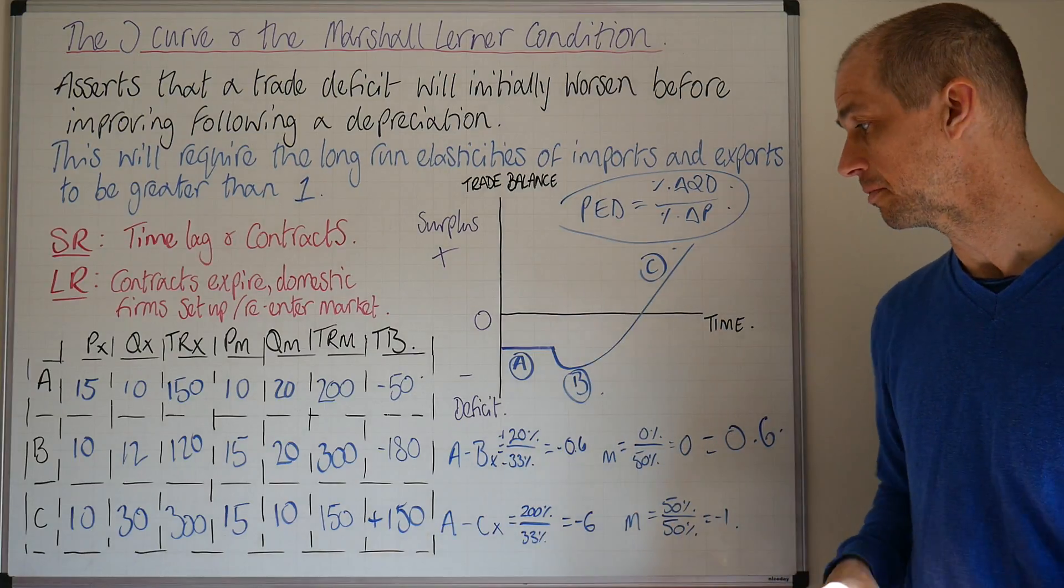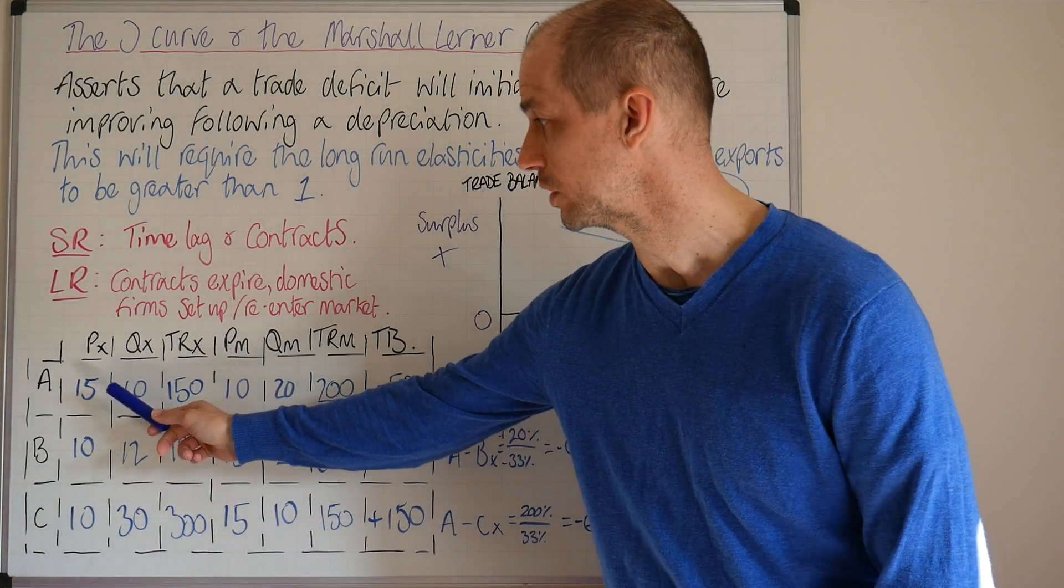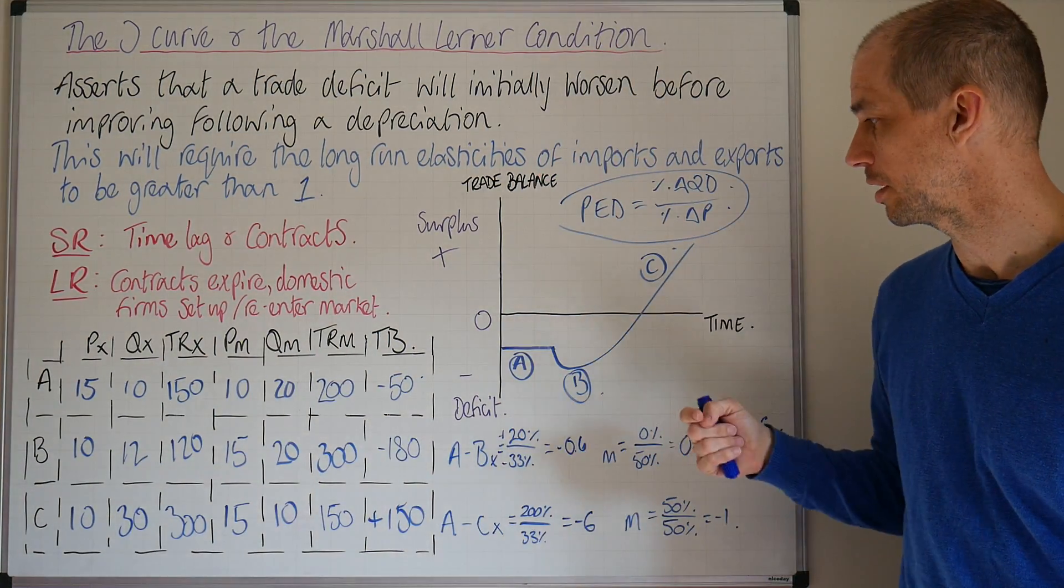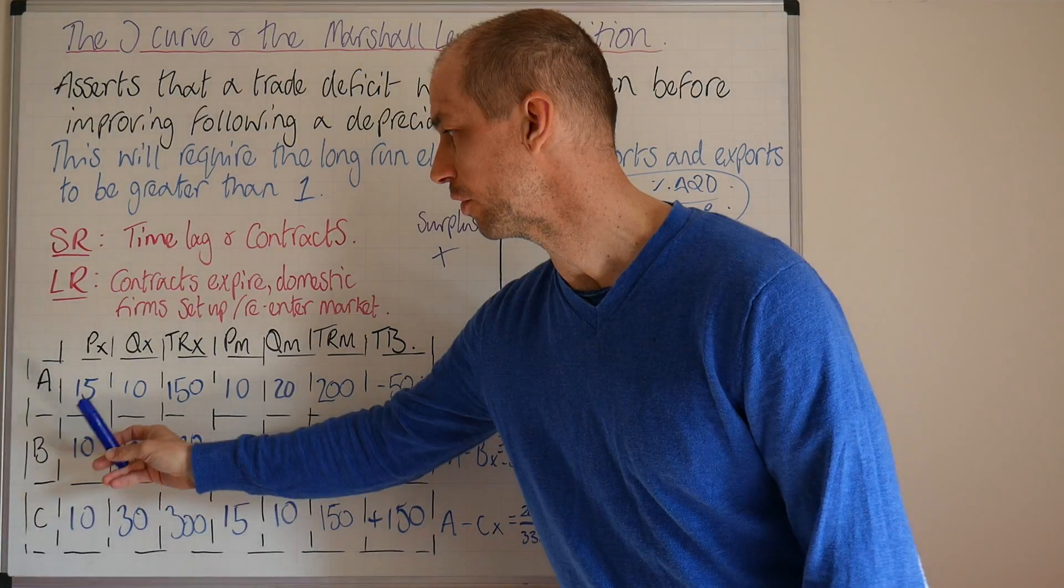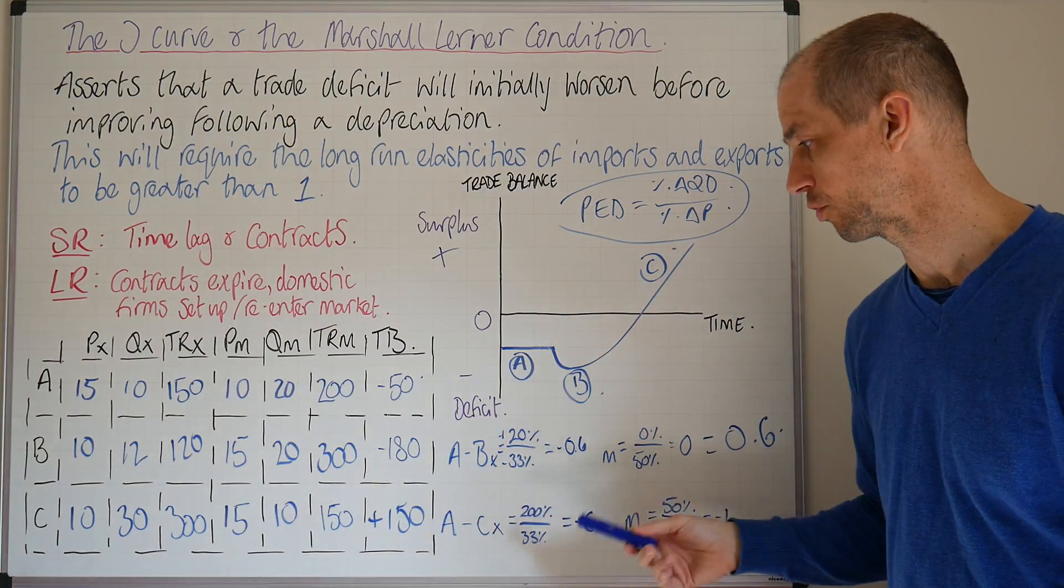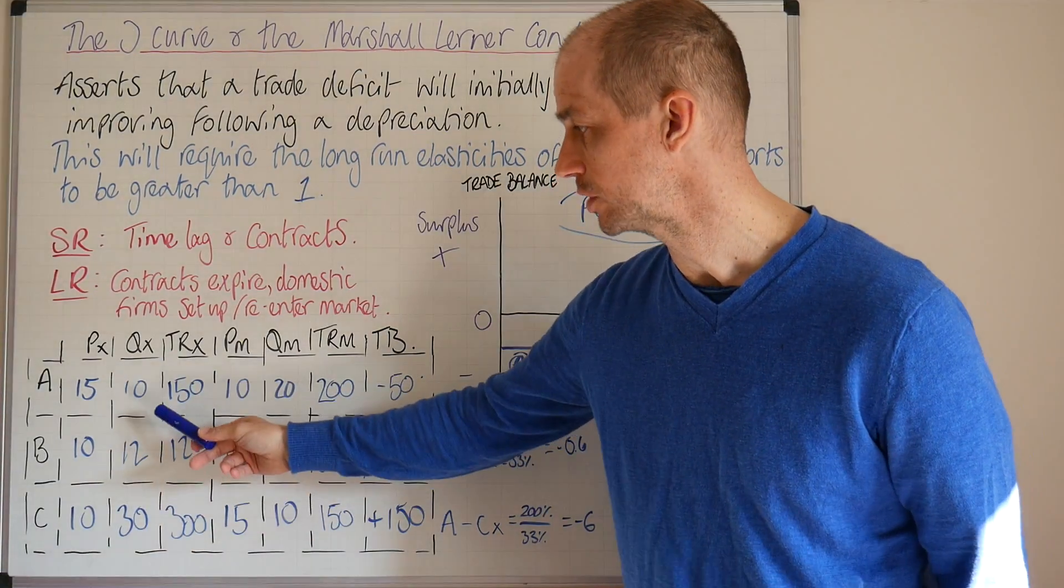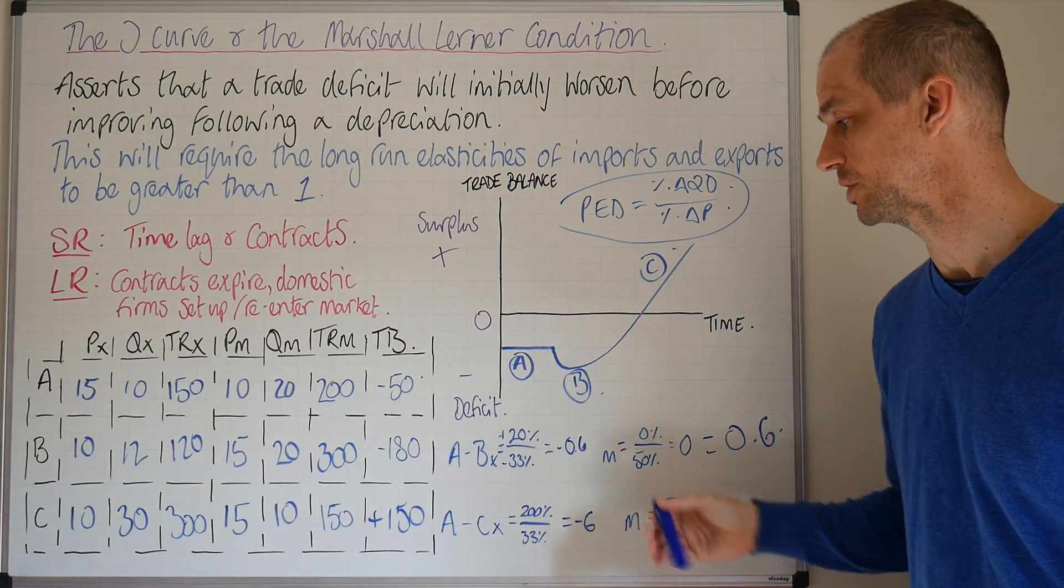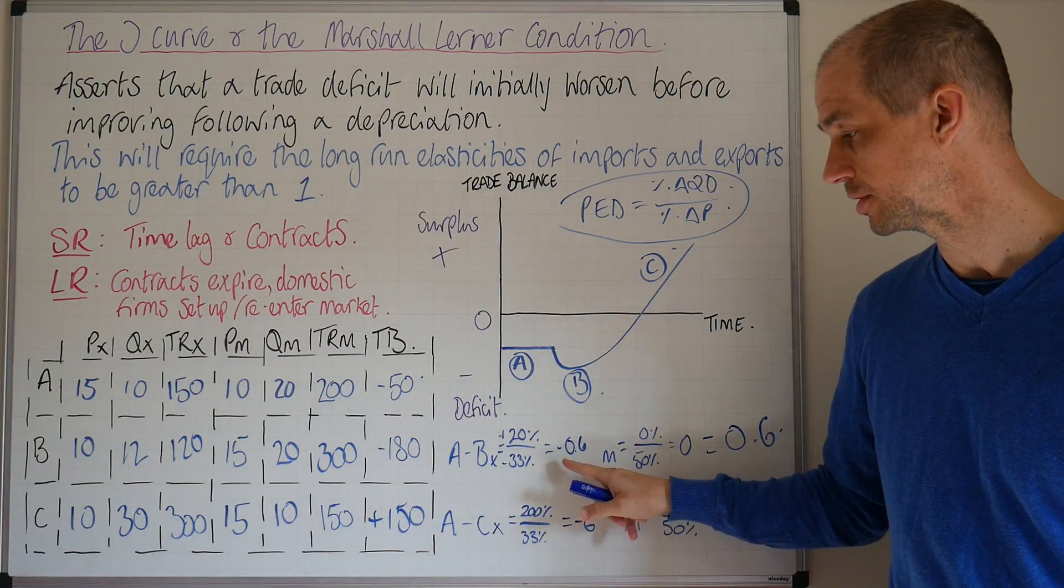As we move from point A to B, we can see there is a reduction in the price level of exports and a slight increase in quantity demanded. If you apply the change divided by original times 100 formula—5 divided by 15 multiplied by 100—you get a 33% change in the price. Meanwhile, 10 to 12 is a 20% increase in quantity demanded. That gives rise to a price elasticity of demand for exports in the short run between A and B of minus 0.6.